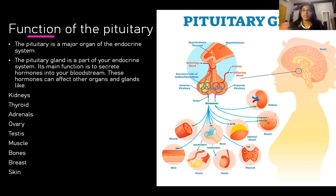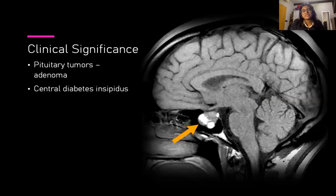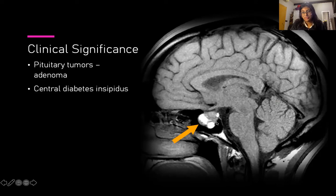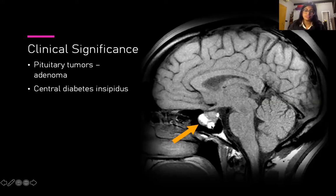Another clinical point: we also have pituitary adenoma or a pituitary tumor, which is a very common pathology of the pituitary. In this picture you can see a pituitary adenoma — as compared to a normal pituitary gland it is not well defined and doesn't have a normal shape. It is invading the sphenoidal sinus.